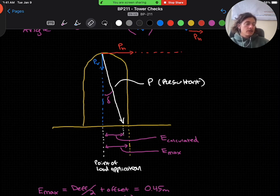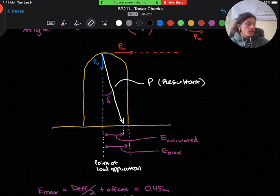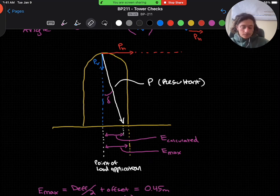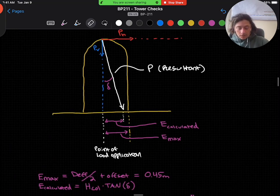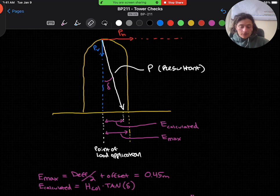The calculated eccentricity will be the horizontal distance from the force incidence calculated as the column height multiplied by the tangent of the resultant angle. So h column times the tangent of the resultant angle. And I've drawn e-calculated and e-max onto this diagram for you.